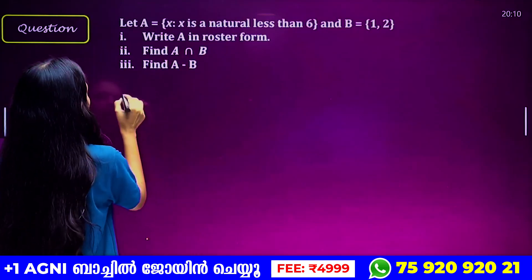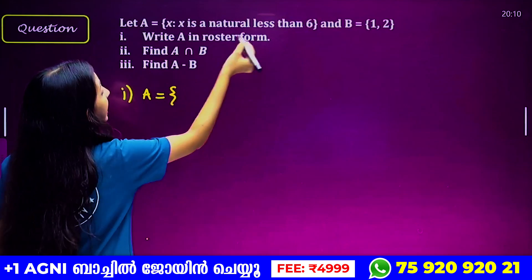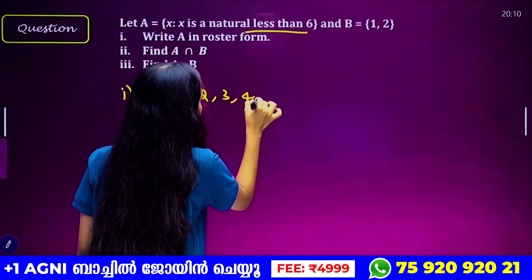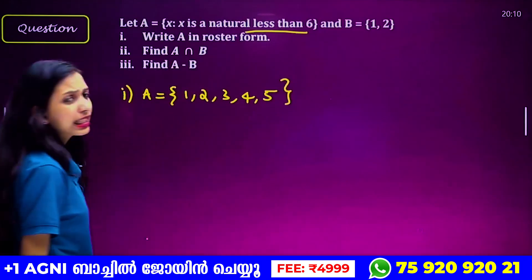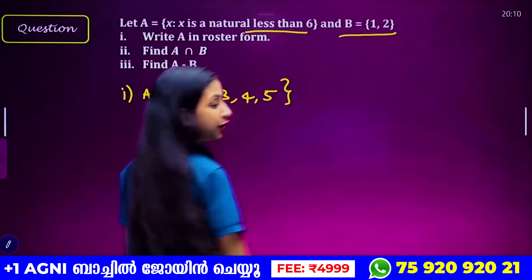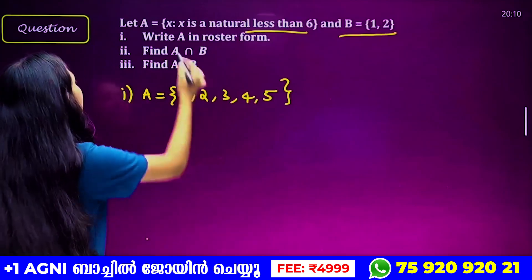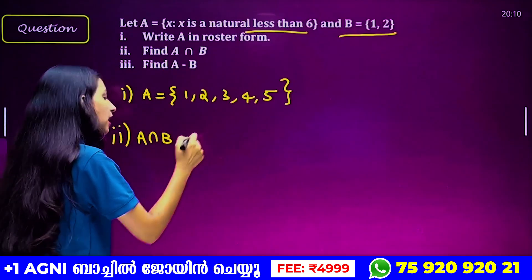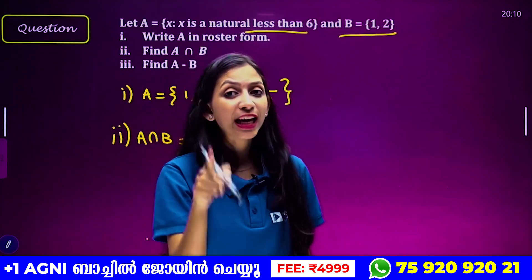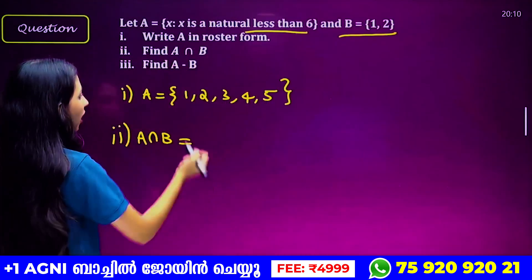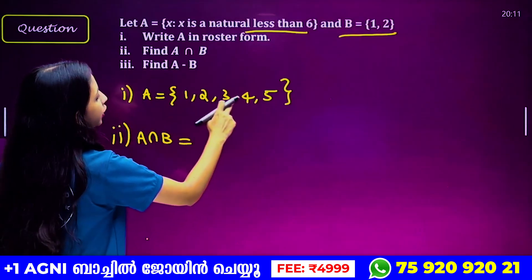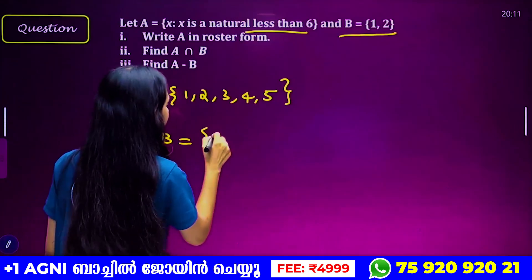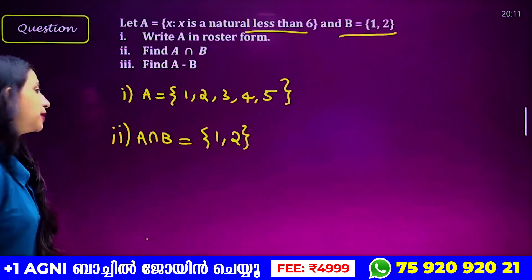Less than 6, so we have 1, 2, 3, 4, 5. These are the same elements. And B is set {1, 2}. Now we have A intersection B. I have common elements. A is {1, 2, 3, 4, 5} and B is {1, 2}. Common elements are set {1, 2}. That is A intersection B.